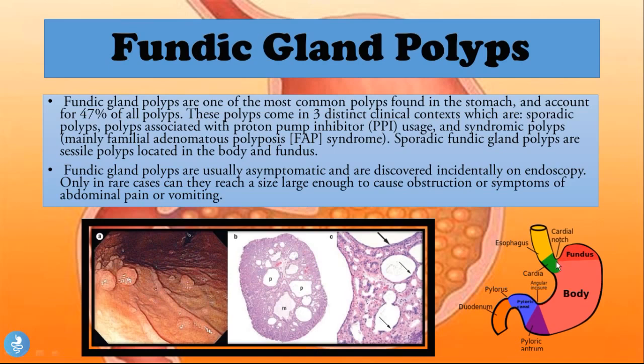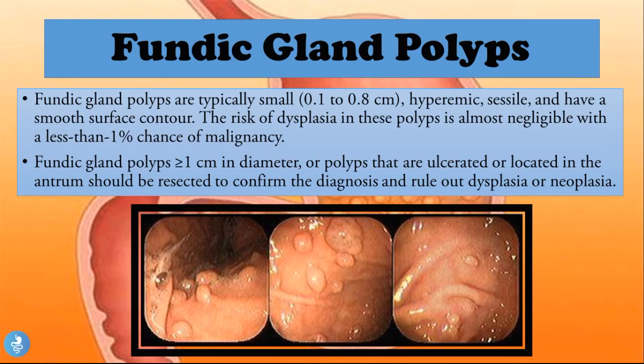The sporadic fundic gland polyps are sessile polyps located in the body or fundus of the stomach. As you can see on the diagram, the fundus is the upper portion and the body is below it — hence the name fundic gland polyps. They are usually asymptomatic and discovered incidentally on endoscopy. Only in rare cases can they reach a size large enough to cause obstruction or symptoms of abdominal pain or vomiting.